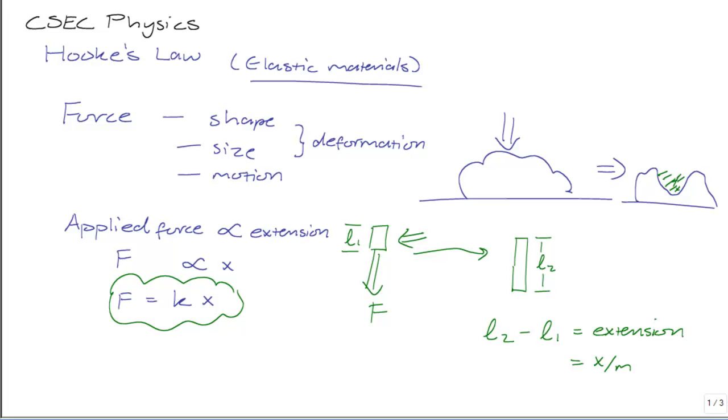Now what is this constant? The constant K is referred to as the spring constant, a constant for your material or for your object. And the spring constant is really just a measure of how much force is required to produce an extension of unit length. In other words, how much force is required to produce an extension of 1 meter?